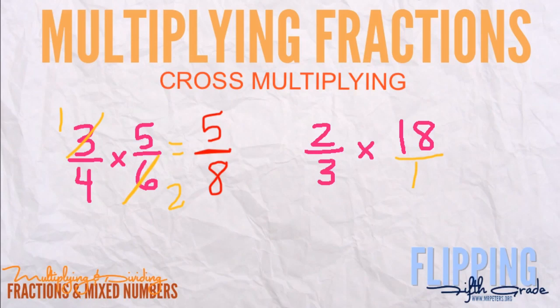First things first, we have to put that 18 over one, because 18 over one is the same as 18. Now let's cross multiply. Two and one—well, one can never be reduced, so you have to leave that alone. But what about three and 18? They share a common factor of three. So three divided by three is one, and 18 divided by three is six.